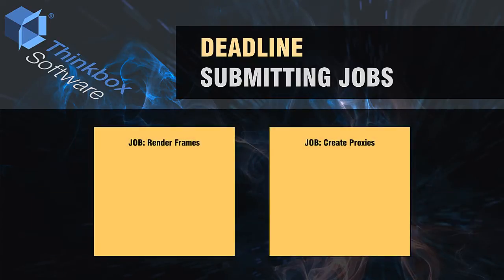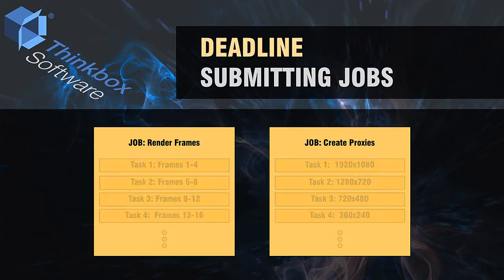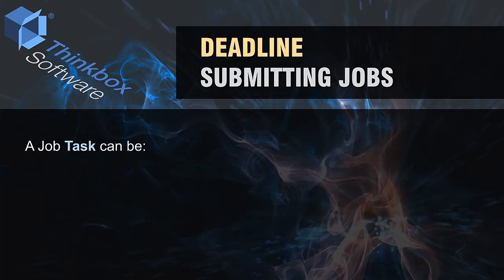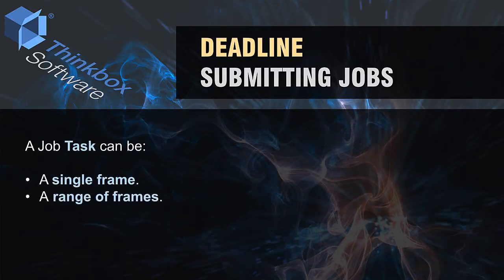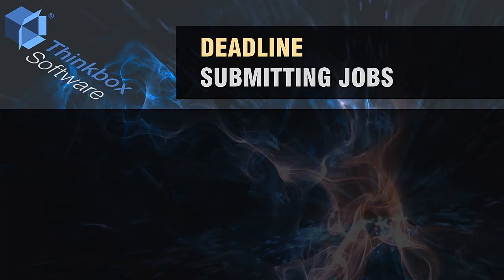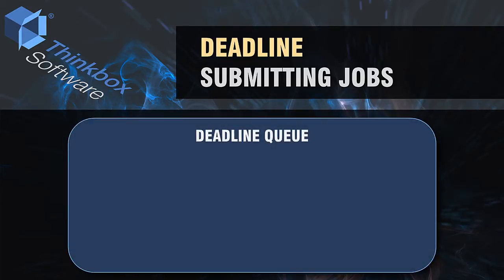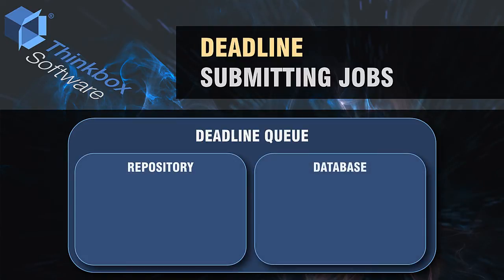Each job submitted to the queue has one or more tasks that represent the smallest portion of work sent to a compute or render node. A task can represent a single frame or a range of frames, and essentially represents a set of parameters passed to the job's application. The queue itself is comprised of two components: the repository and the database.